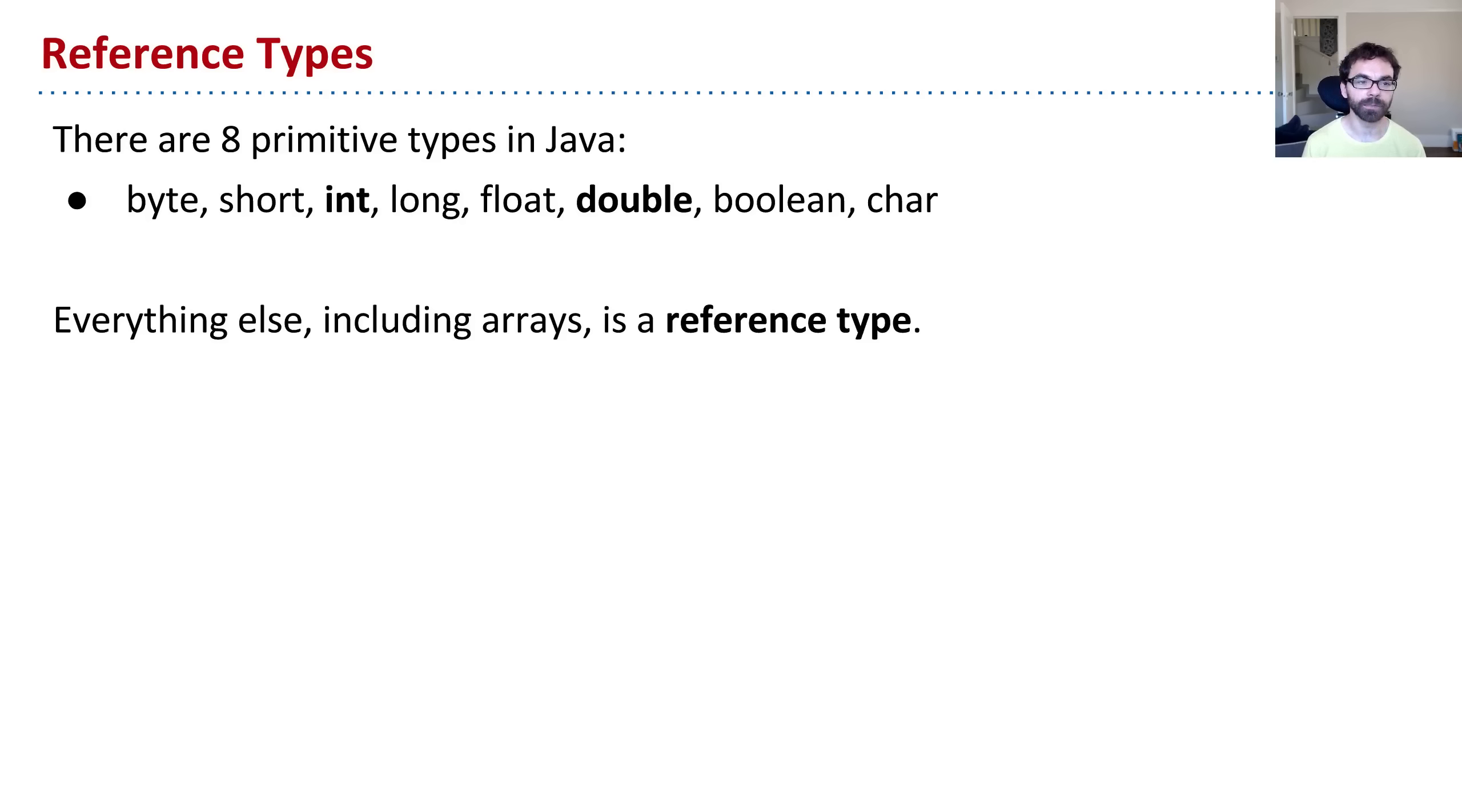So we've said there are eight primitive types in Java: byte, short, int, long, et cetera. And any other variable you declare, say a planet, or a walrus, or an int array, is going to be a so-called reference type. That's just the term for all of the types that are not these.